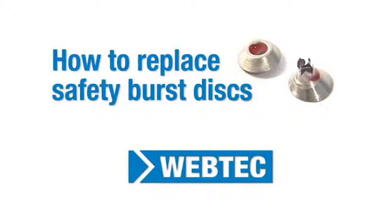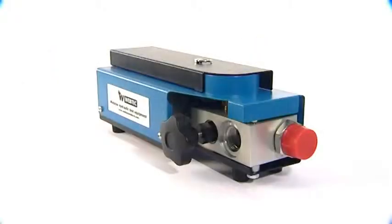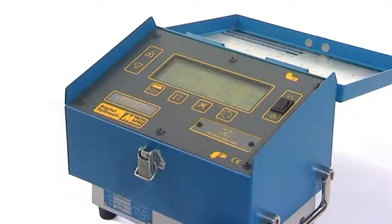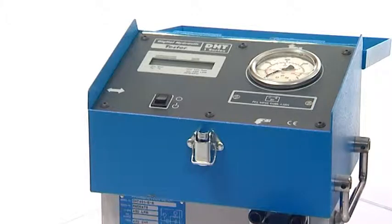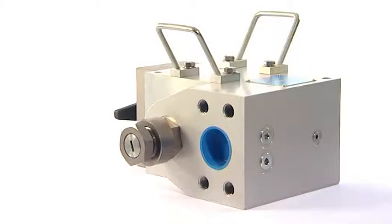In this training video, we'll show you how to replace safety burst discs in your 200, 400, 800, or 1500 litres per minute hydraulic tester.